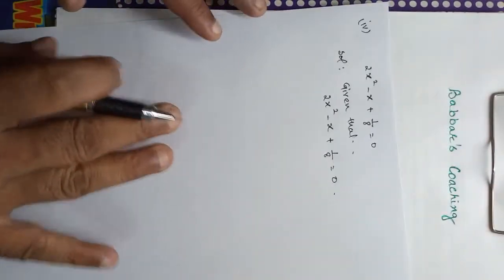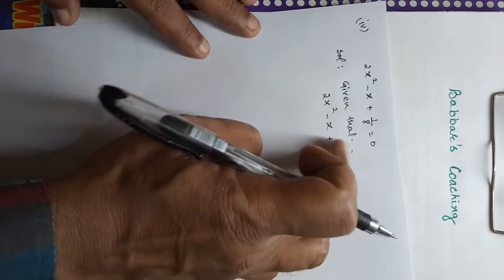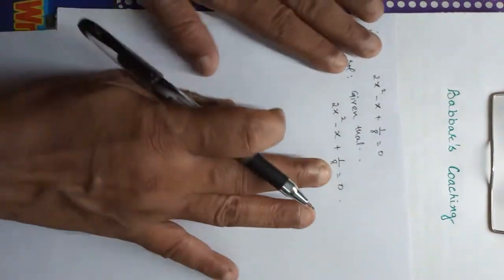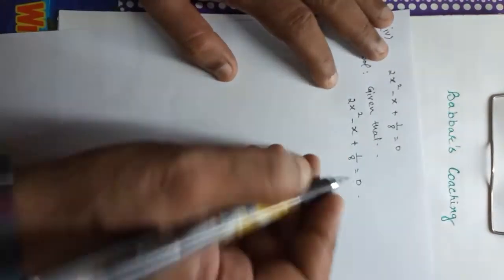We will write the equation 2x squared minus x plus 1 upon 8 is equal to 0. So, students, we can see that this equation is given. So, first of all, what do we do? This is a rational number. We will simplify this equation.